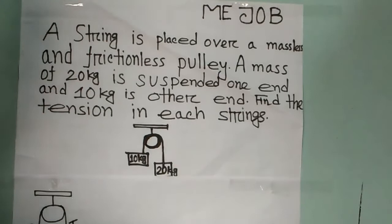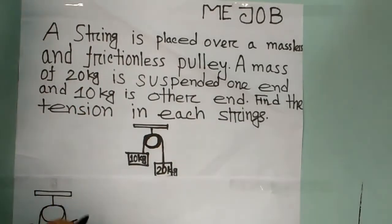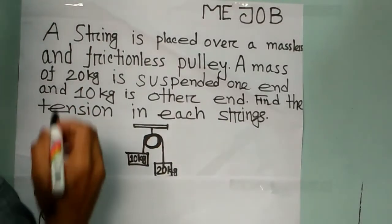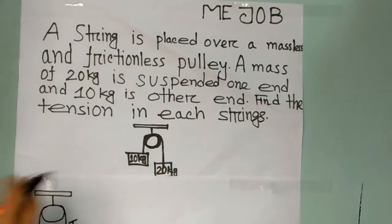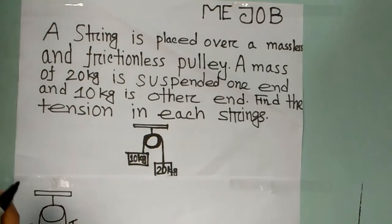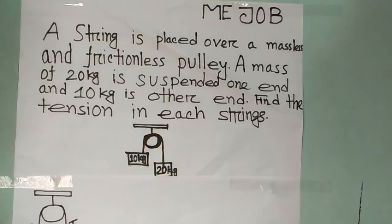Last bullet. A string is placed over a massless and frictionless pulley. A mass of 20 kg is suspended on one end and 10 kg on the other end. Find the tension in each string.